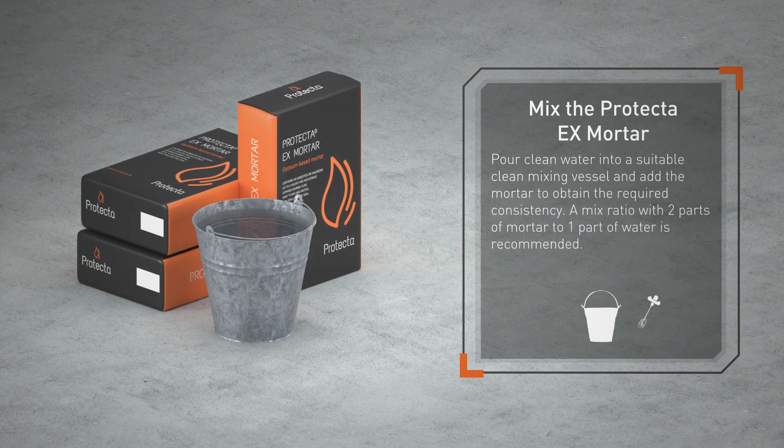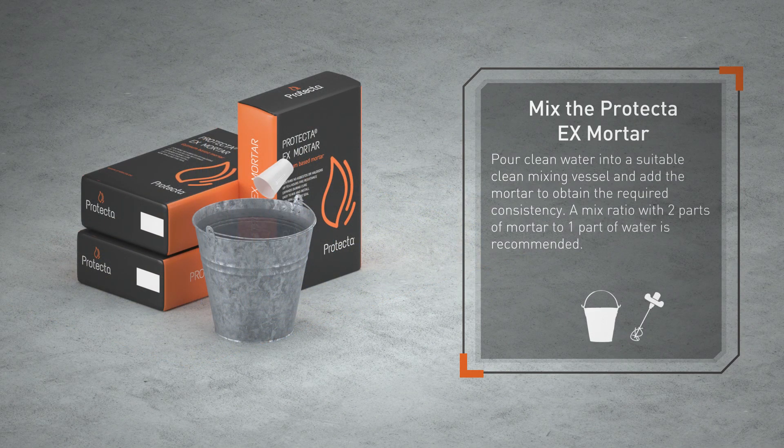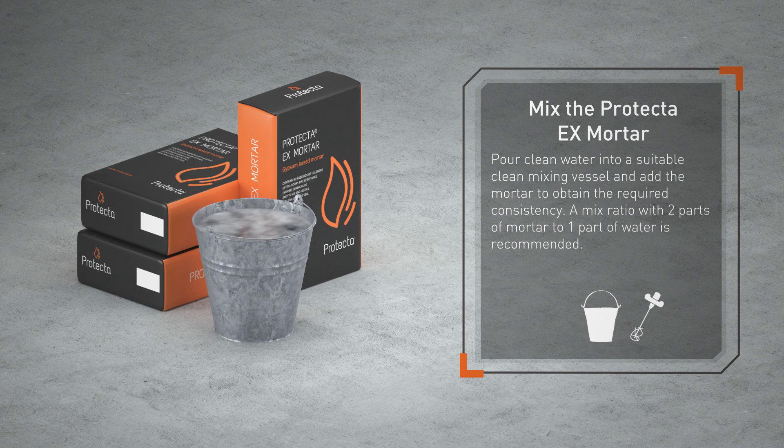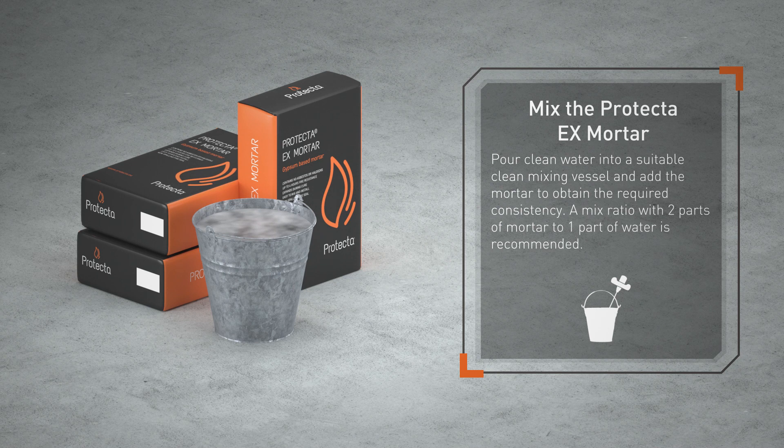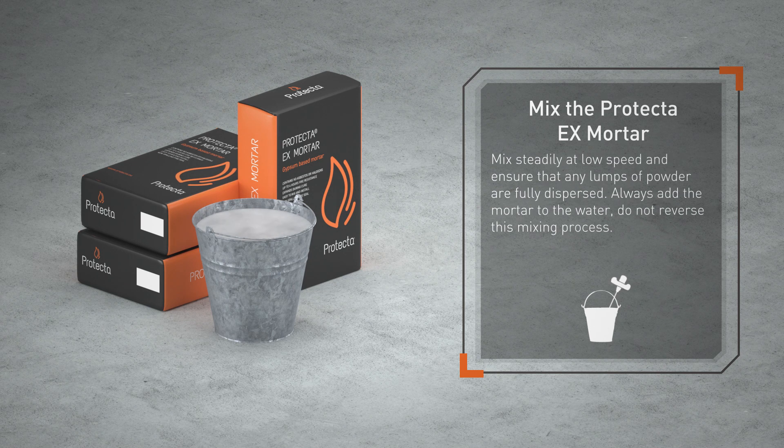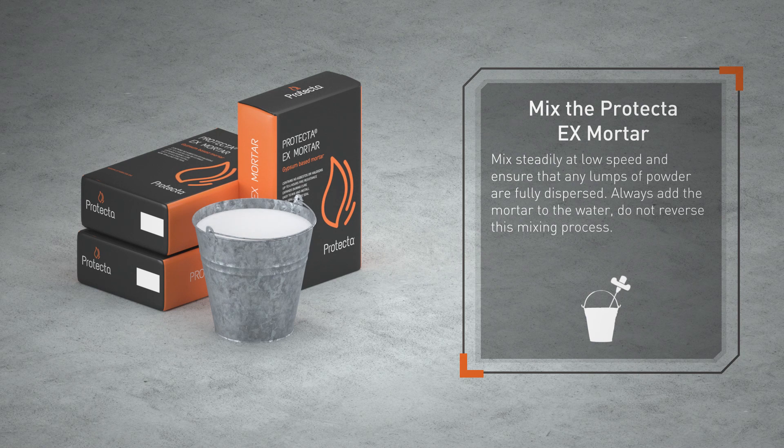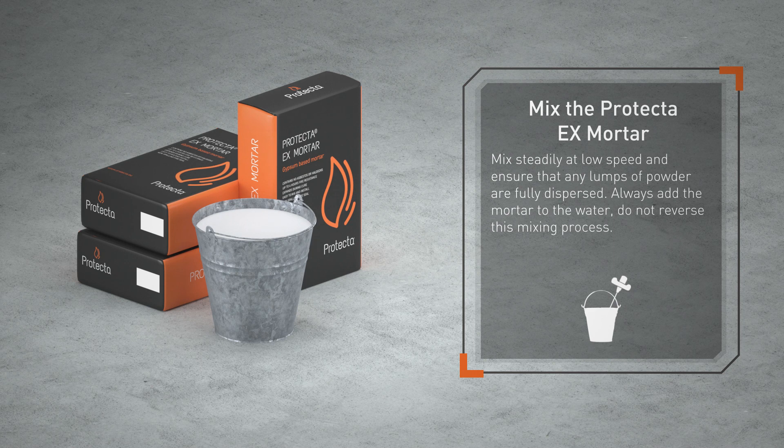Pour clean water into a suitable clean mixing vessel and add the mortar to obtain the required consistency. A mix ratio with two parts of mortar to one part of water is recommended. Mix steadily at low speed and ensure that any lumps of powder are fully dispersed. Always add the mortar to the water, do not reverse this mixing process.